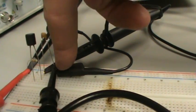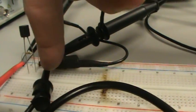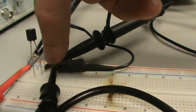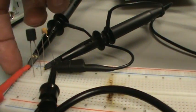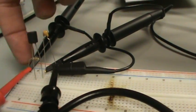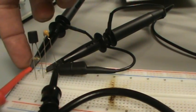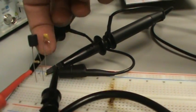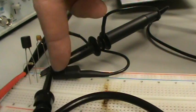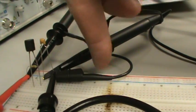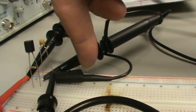On this end we have ground from the oscilloscope and ground from the function generator. On this side we have positive from the function generator and channel 1 from the oscilloscope. Channel 2 positive of the oscilloscope is right here. You only need one ground from the oscilloscope because they share the same ground.